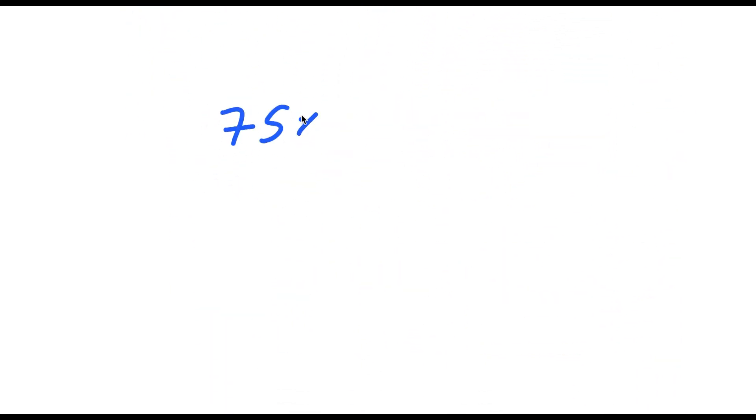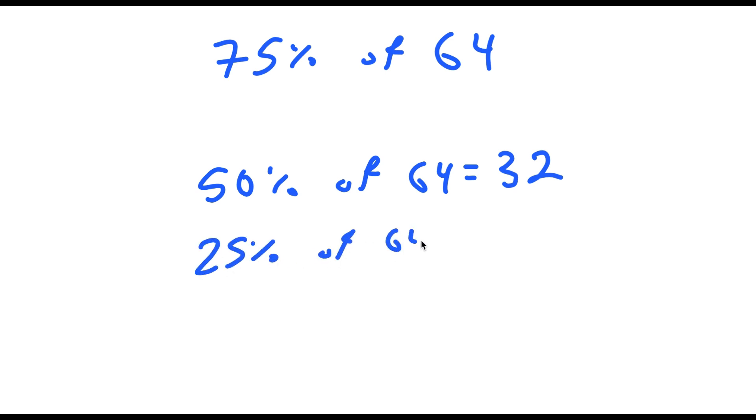So now let's try 75% of 64. So 75% of 64, again, we first take 50% of 64, half of 64 is 32, and then 25% of 64, which is just 64 over 4.